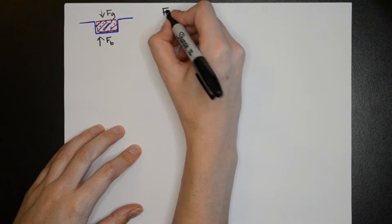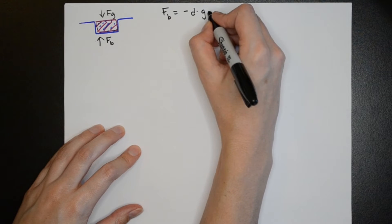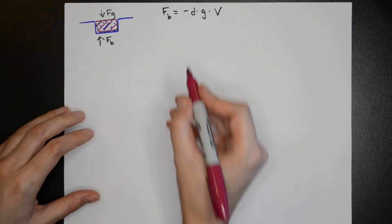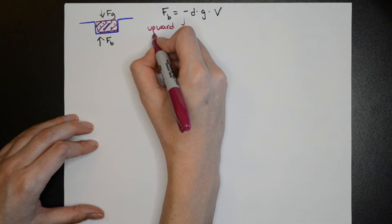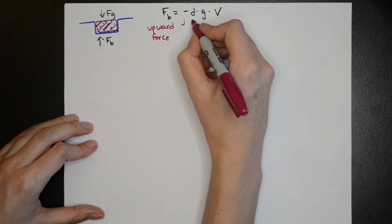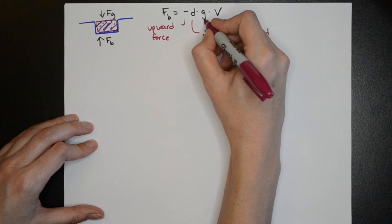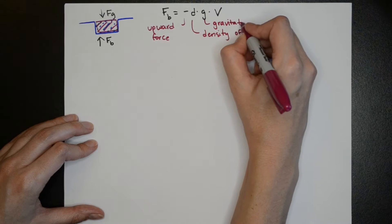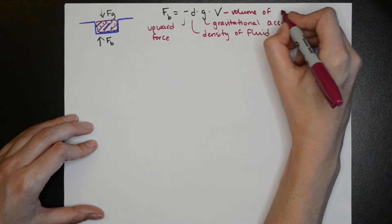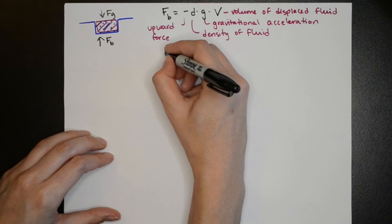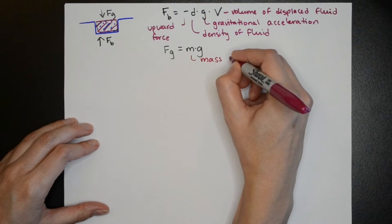The buoyant force is equal to minus d g v. So the minus here comes from the fact that the buoyant force is in the upward direction. We generally consider forces down being positive because of gravity. D is the density of fluid, g is the gravitational acceleration which is a constant, and v is the volume of displaced fluid.